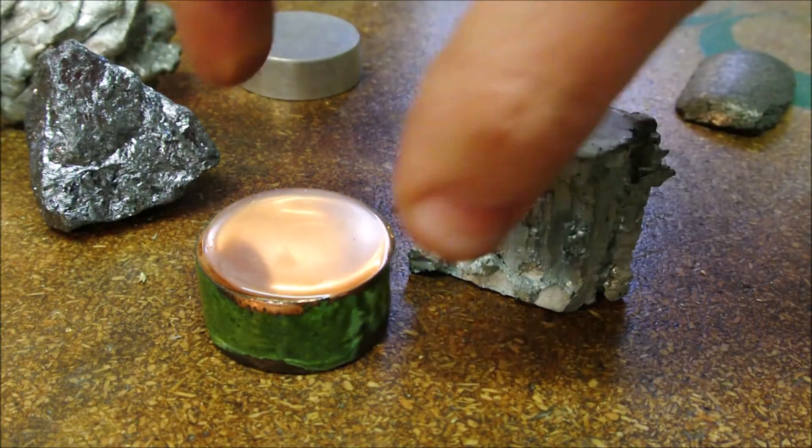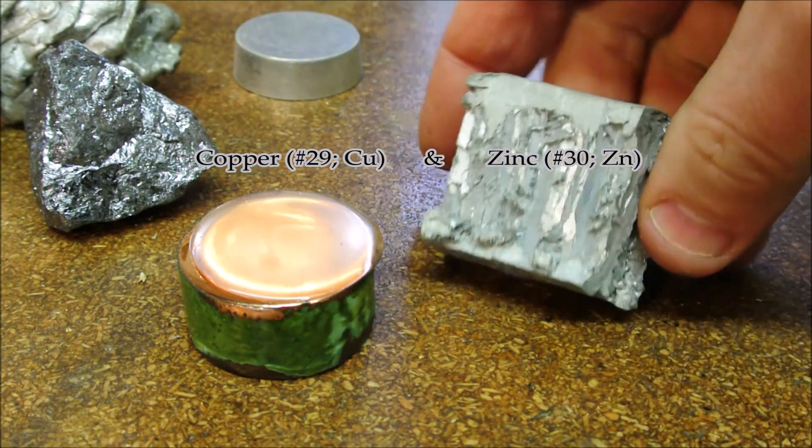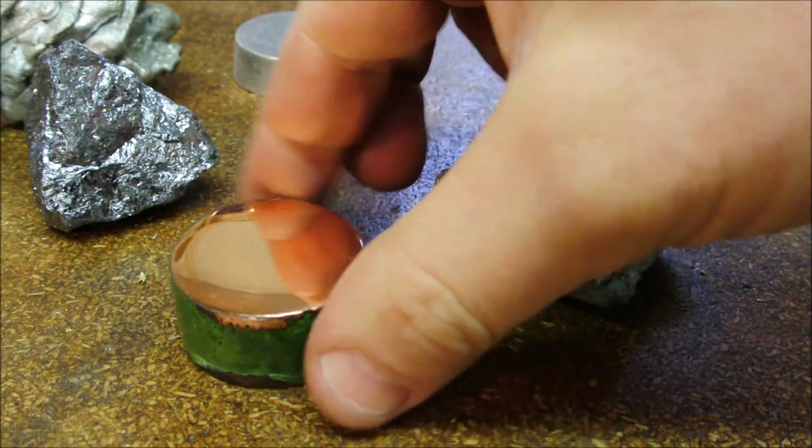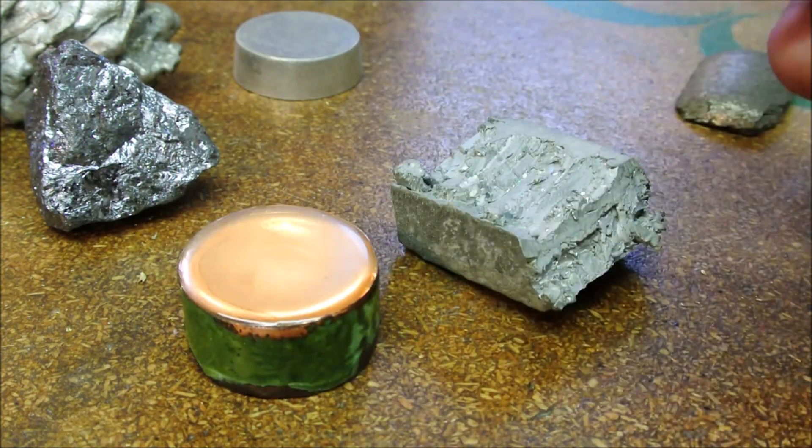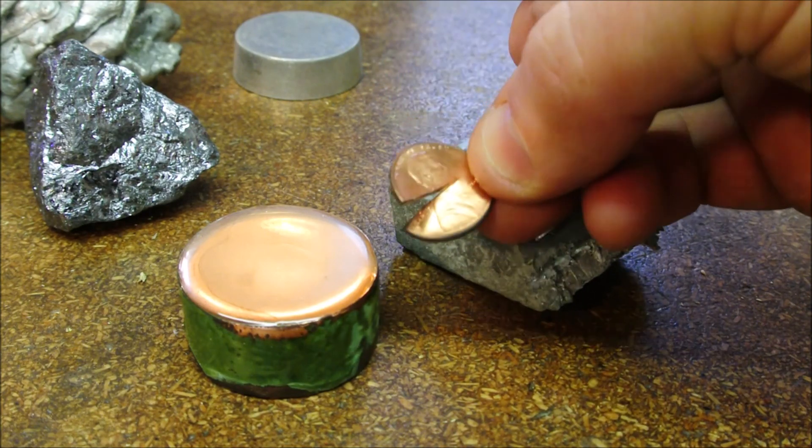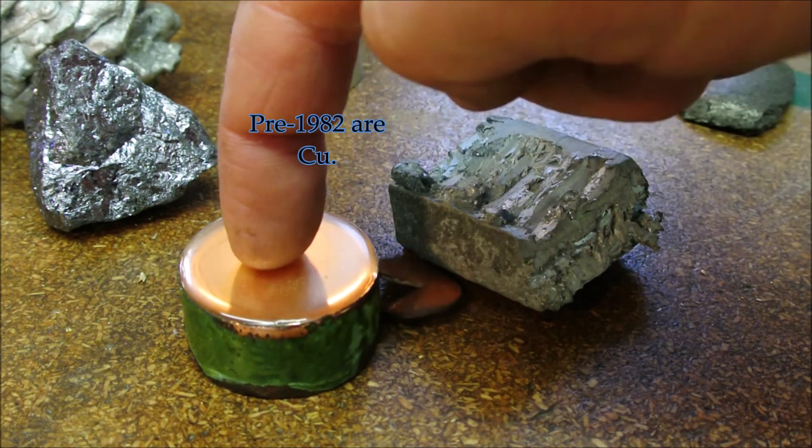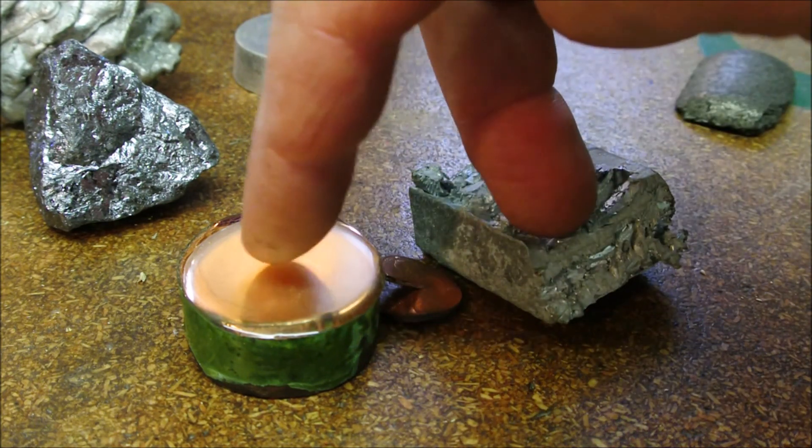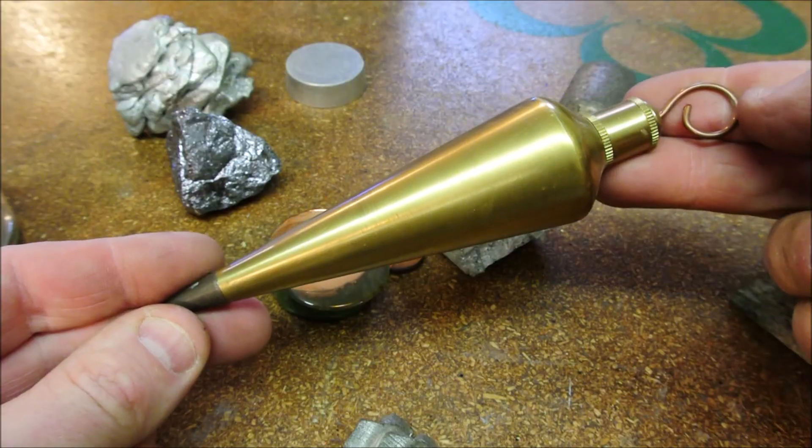These two are very heavy: zinc and copper. These two are used to make pennies. Older pennies are 100% copper. Newer ones have zinc in the middle. If you mix these two together as an alloy, you get brass.